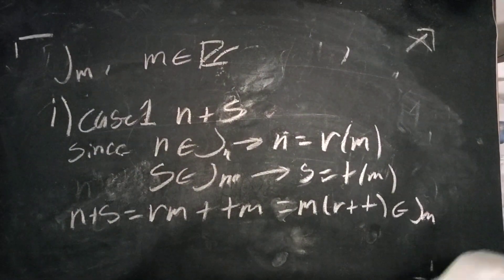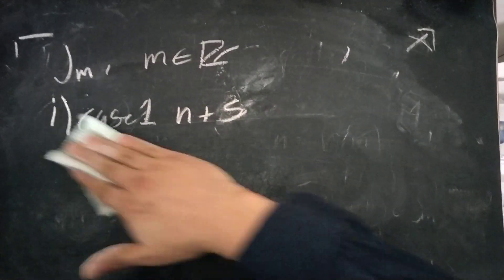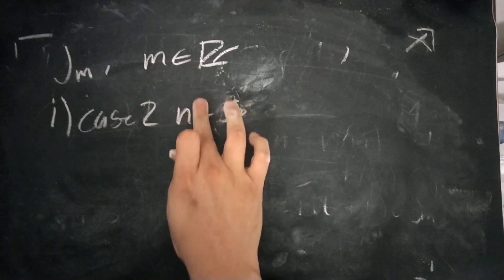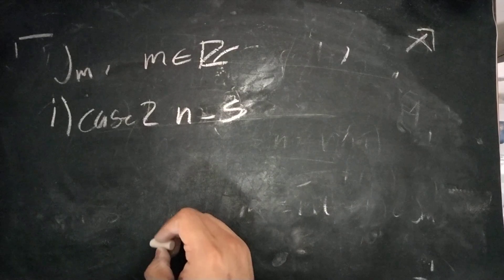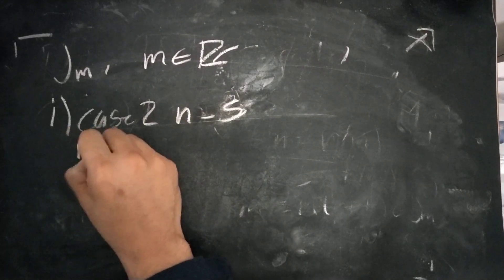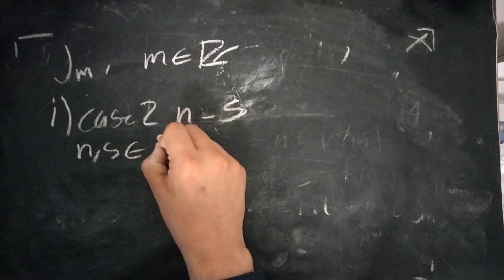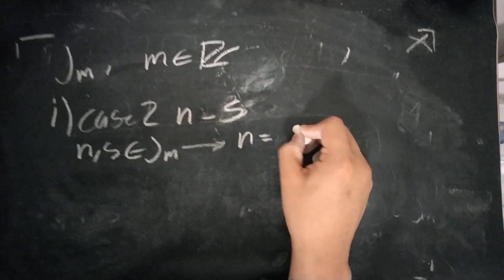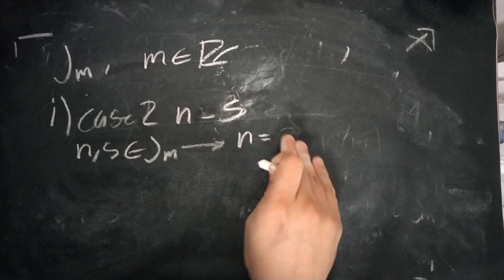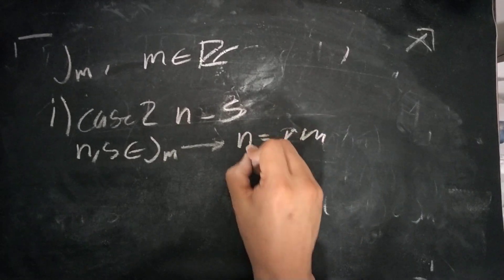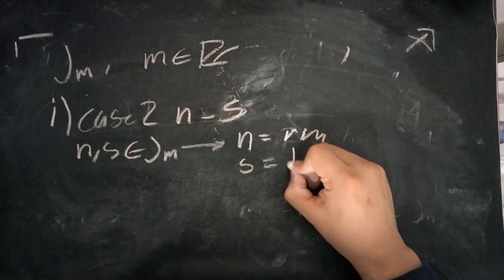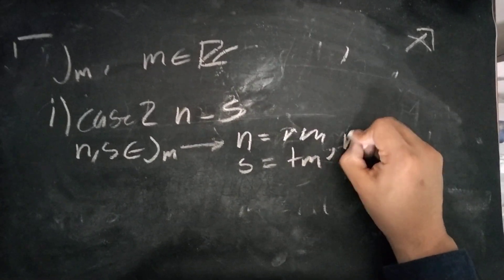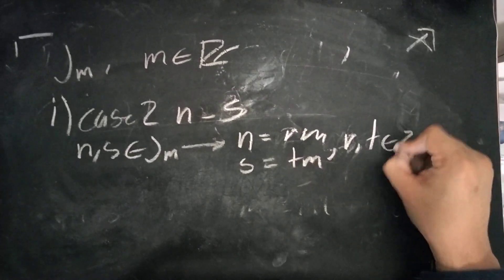Now I'll do the negative case, even though it's essentially the same in this case. We'll do case two and we'll just do n minus s. Again, since n and s are elements of J of m, we can write them as such: n is equal to rm and we'll say s is equal to tm, where r and t are elements of the integers.